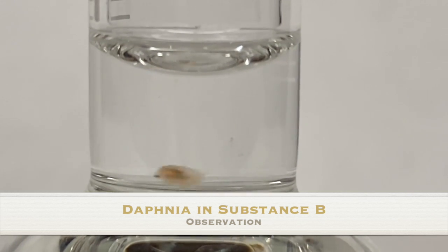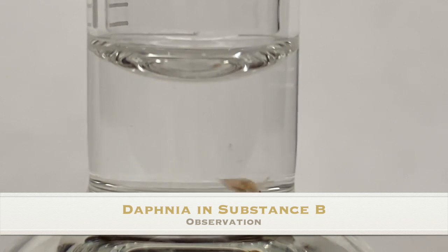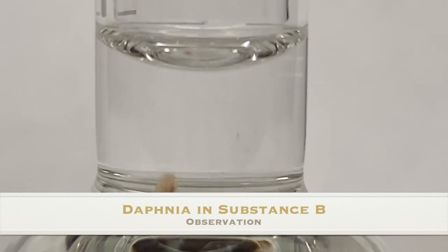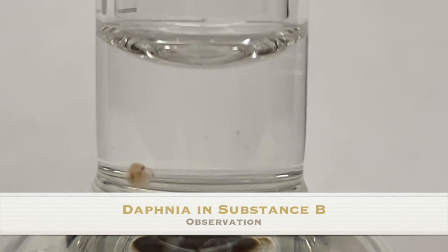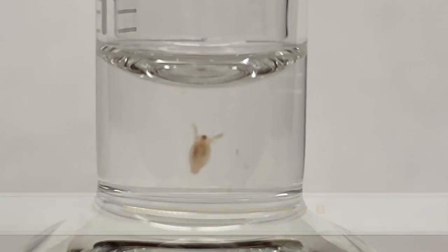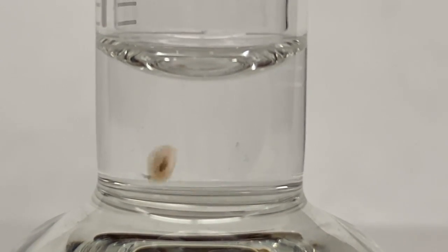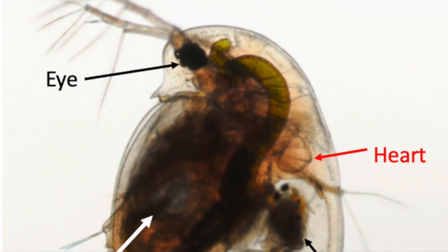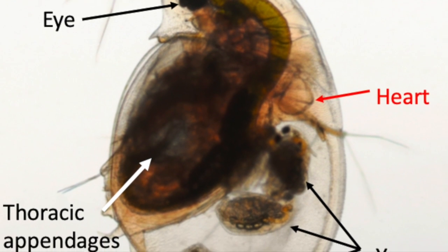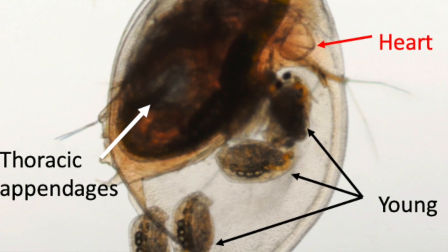And now we're looking at Daphnia in Substance B. We're going to make our observations for about 25 seconds. At this time you need to write down your observations about the differences in behavior of our Daphnia between the control and Substance B, and you need to choose the appropriate hypothesis.